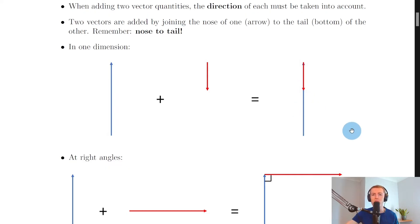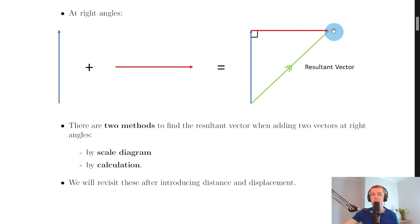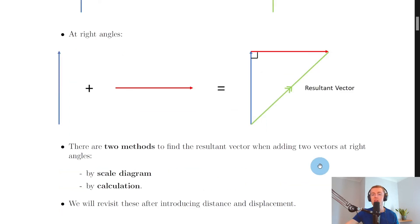Similarly at right angles, when you add a vector going up to one going along, we can draw in the resultant vector. The resultant is drawn from the starting point to the finishing point — because we go up and then along, our starting point is here and our finishing point is here, with the shortest distance from start to finish shown by the double arrow. Use two arrows for the resultant vector and one arrow for each single vector so you don't get confused.